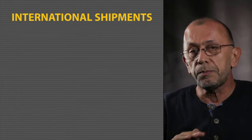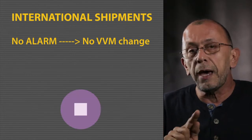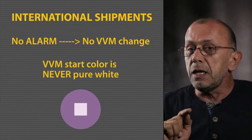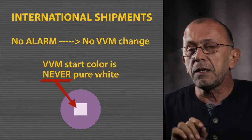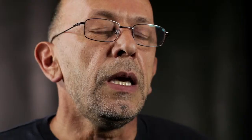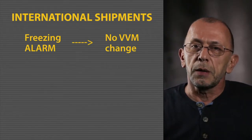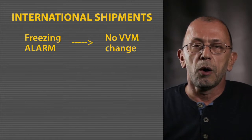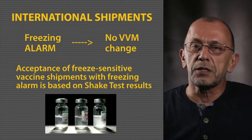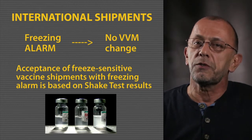Here, note one very important fact: in international shipments, if there is no alarm, we do not expect any change in VVM square color — but it is never pure white; there is always around a 10% tinge of color from the outer circle. In the case of a freezing alarm, there cannot be any change in VVM status because negative temperatures do not have any negative impact on VVM status. The decision to accept or reject freeze-sensitive vaccine shipments with a freezing alarm should be based on the results of the WHO-recommended shake test.